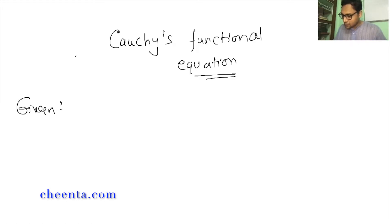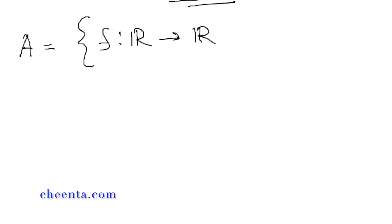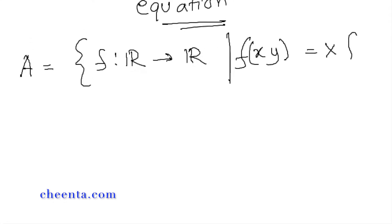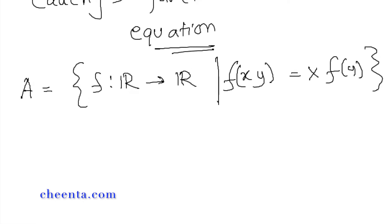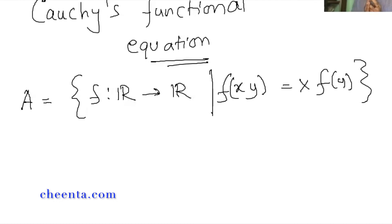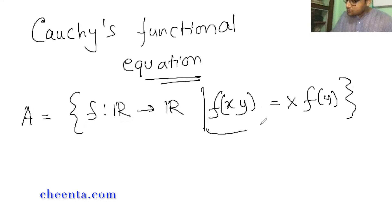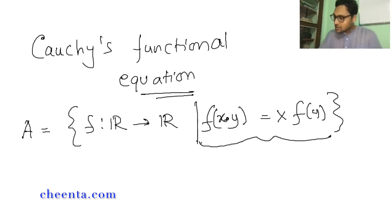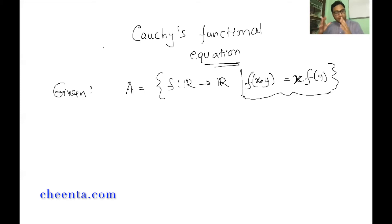The given data is this: we have a set of functions A which contains all the functions from real numbers to real numbers such that f(xy) = x·f(y). So all such functions which have this property — whose domain is real numbers and whose co-domain is also real numbers — and which satisfy f(xy) = x·f(y). This is the set of functions we are working with.